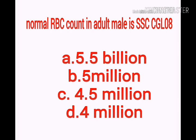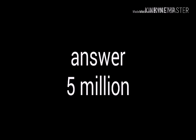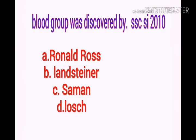What is the normal RBC count in an adult? Options: a) 5.5 million, b) 5 million, c) 4.5 million, d) 4 million. Answer is 5 million.